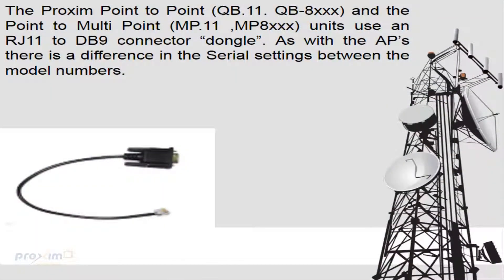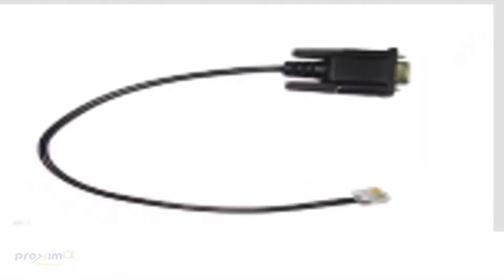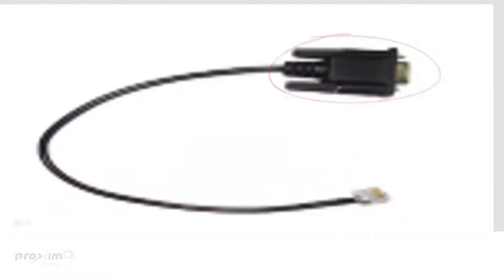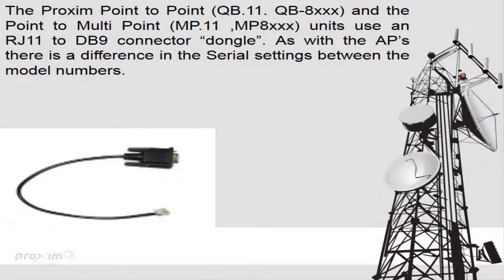Now we're going to move on to the Opto radios. The Proxim point-to-point QB11, QB8100, QB8200 series, and the point-to-multipoint MP11 and MP8100/8200 radios use an RJ11-to-DB9 connector — what we call a dongle. The RJ11 is on one end and the DB9 is on the other. As with the APs, there is a difference in the serial settings between the model numbers — between the MP11/QB11 and the MP8000 family.